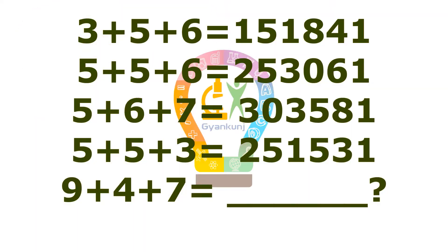If 3 plus 5 plus 6 is equal to 151841, 5 plus 5 plus 6 is equal to 253061, 5 plus 6 plus 7 is equal to 303581, 5 plus 5 plus 3 equal to 251531, then do let us know in the comment section the value of 9 plus 4 plus 7.